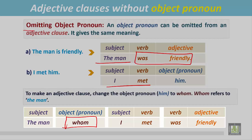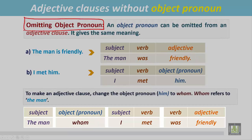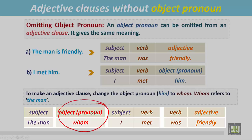We can also omit this object pronoun and it gives the same meaning. Let's see: 'The man whom I met was friendly.' We can omit 'whom' and say: 'The man I met was friendly.' Without the object pronoun, it carries the same meaning.